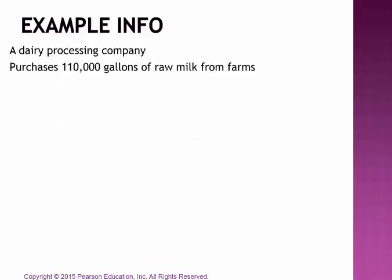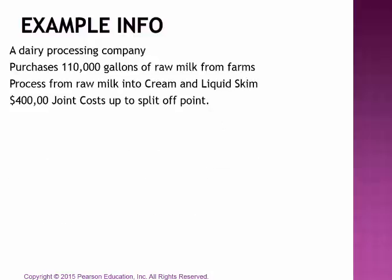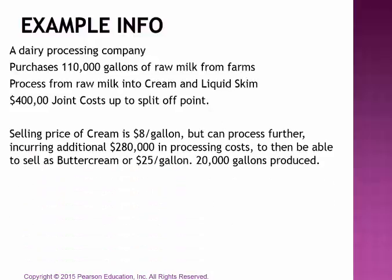We're going to continue using the same dairy processing company information. We could either sell the items at the split-off point as cream and liquid skim, or we could invest additionally and sell them as buttercream and condensed milk. Management needs to decide which plan — Plan A or Plan B — is most profitable for the company. Using the same information, we have $400,000 worth of joint cost up to the split-off point.